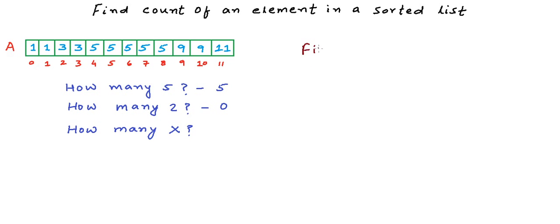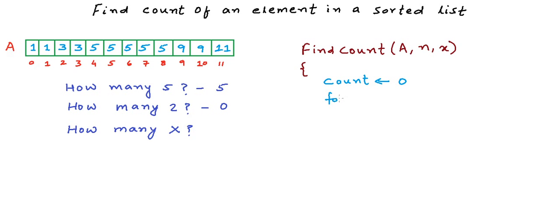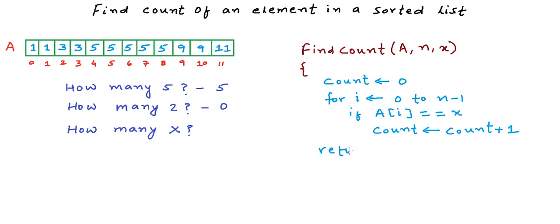If we write a function find_count that takes as arguments array a, its size n, and element x, the logic would be straightforward. We take a variable count initialized to zero, run a loop from index zero to n minus one, and if a[i] is equal to x, we increment count. When we come out of the loop, we return count. This is a linear search scanning the whole array for element x.